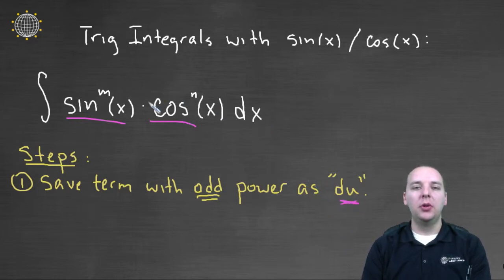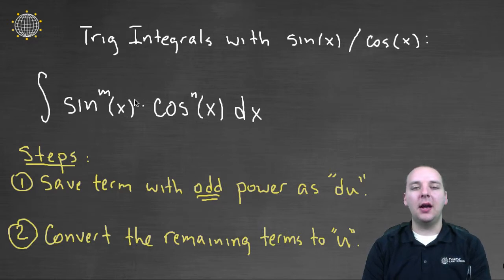We're going to do a u-substitution where the term that you've saved is going to be the du put at the end of the integral. Now here's the strategy when you're dealing with sine and cosine, and I'll explain why this works in just a second. But for now, just trust me that the term we're going to save that's going to be our du is going to be the term that has the odd power.